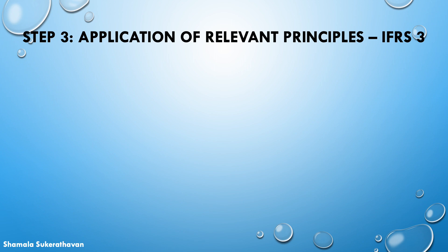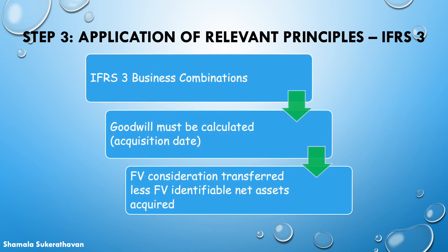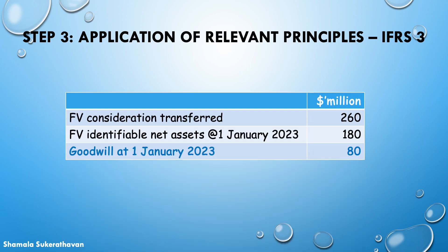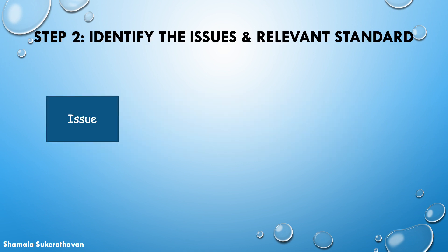In the business combination, IFRS 3 states that at acquisition date, goodwill must be calculated. Goodwill is the difference between the aggregate of the fair value of the consideration transferred and the fair value of the acquirer's identifiable net assets. Therefore, at acquisition date 2023, the goodwill arising from the business combination is calculated as follows: the fair value of the consideration transferred is $260 million and the fair value of the identifiable net assets of MIT at 1 January 2023 is $180 million, so the goodwill at acquisition date is $80 million.